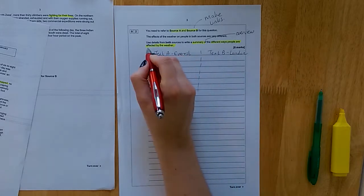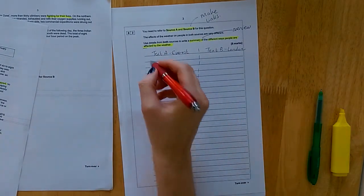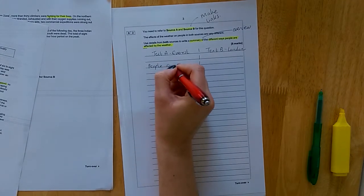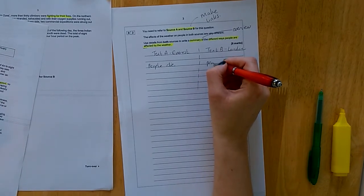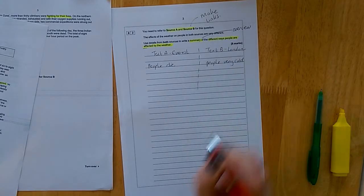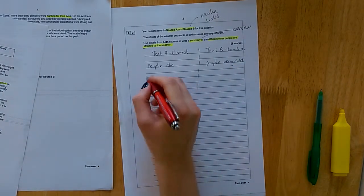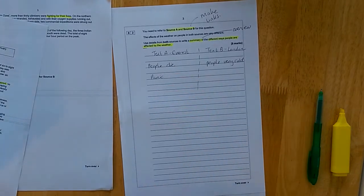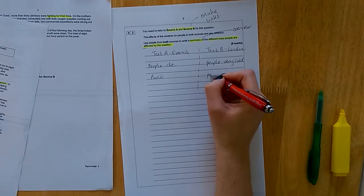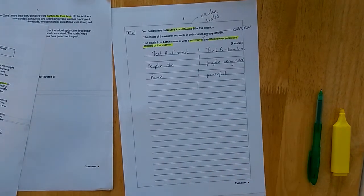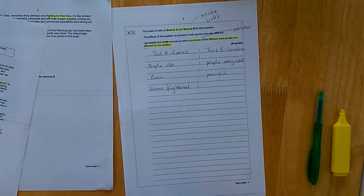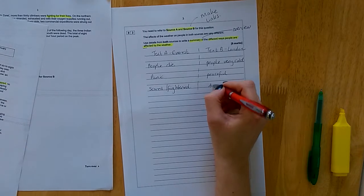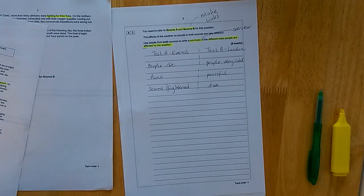And we are thinking about how people are affected by the weather. So one effect here, in source A, is that people die. In contrast, people just feel very cold in text B. In text A, one of the effects is panic. Whereas in text B, people feel peaceful and nostalgic. I'd say another effect is people feeling scared or frightened in text A. Whereas in contrast, we've got a sense of awe at the beauty of the London snow in text B.